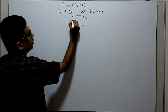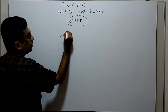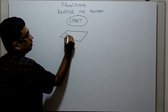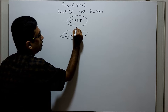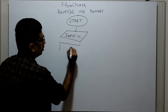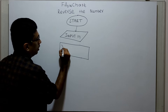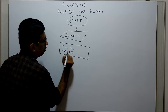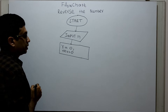Logical start of the flowchart. I am obtaining input from the user in a variable n. Next, I am initializing two variables: R equal to 0 to store the remainder, and REV equal to 0 to store the number reversed step by step.